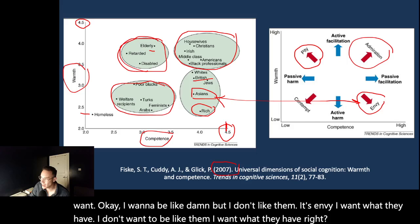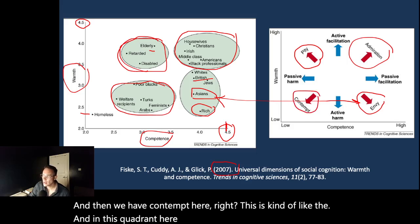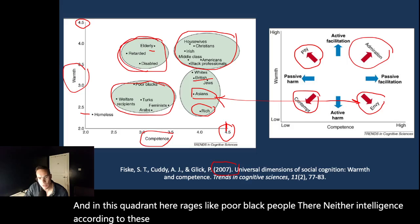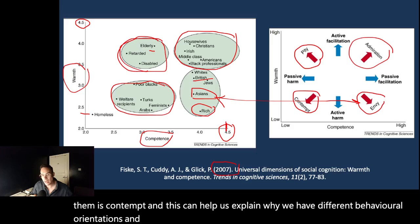And then we have contempt here. This is in this quadrant. Just like poor black people, they're neither intelligent according to these stereotypes, nor are they very warm. And hence, all I feel for them is contempt. And this can help us explain why we have different behavioral orientations and reactions towards different groups.